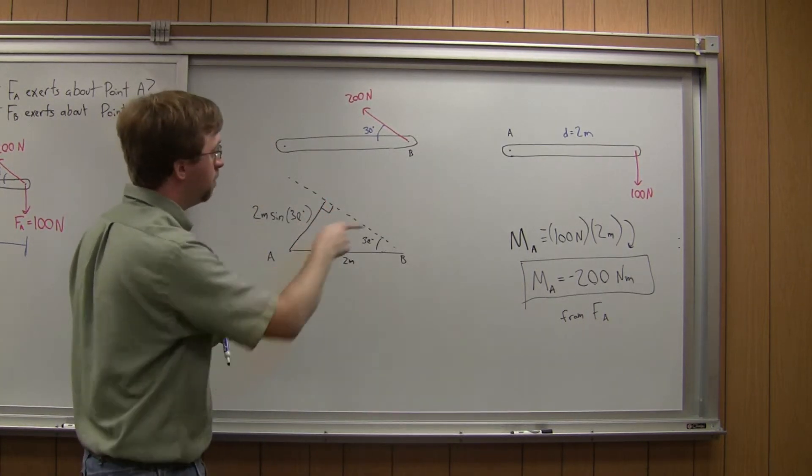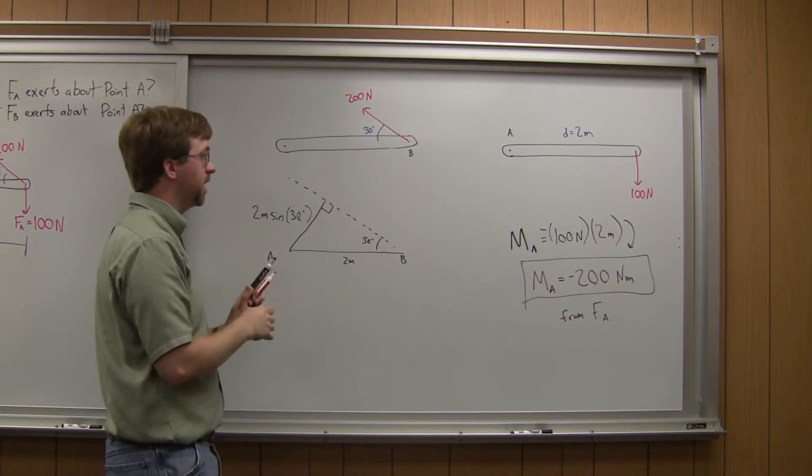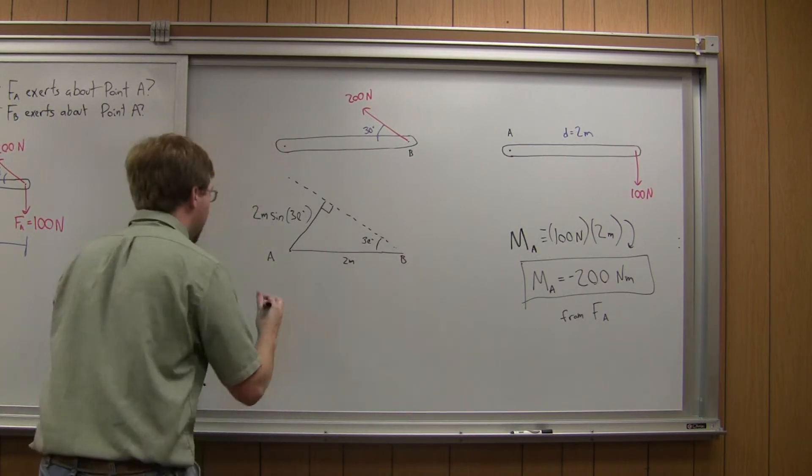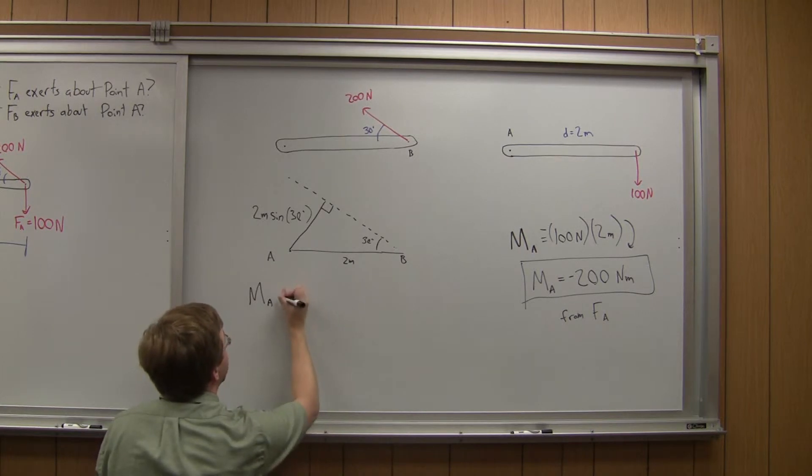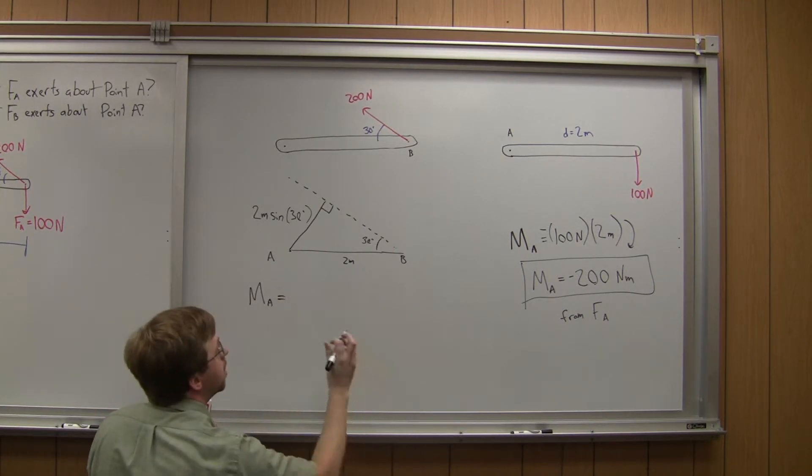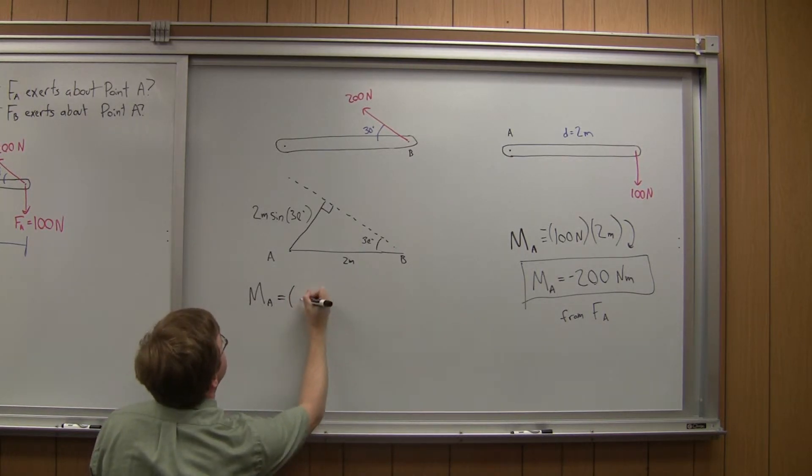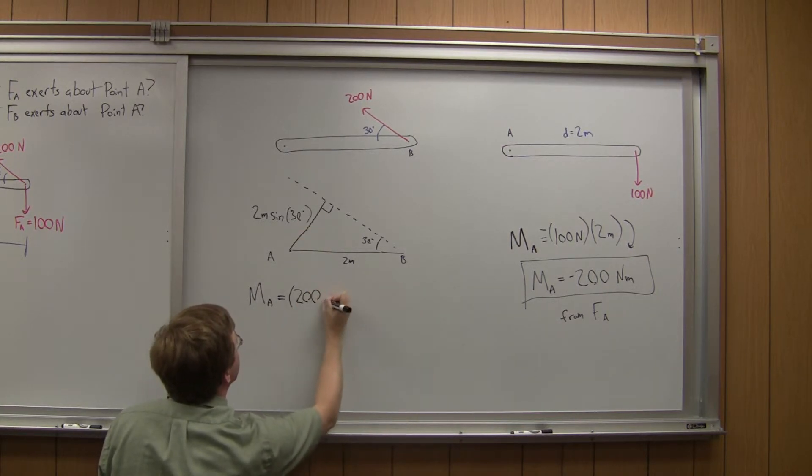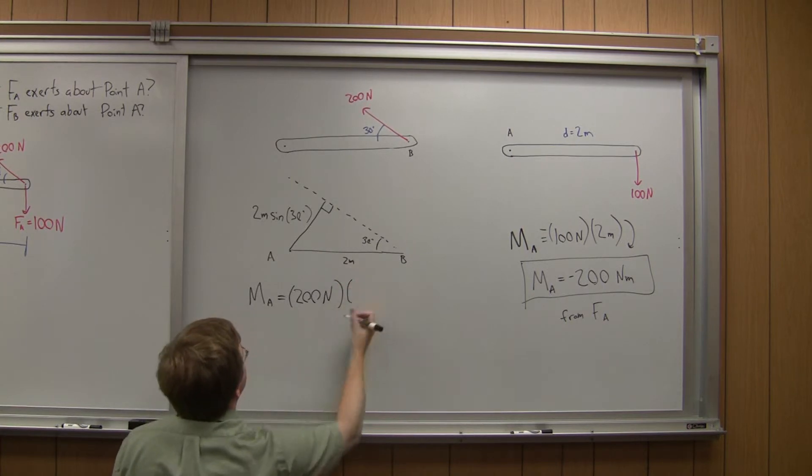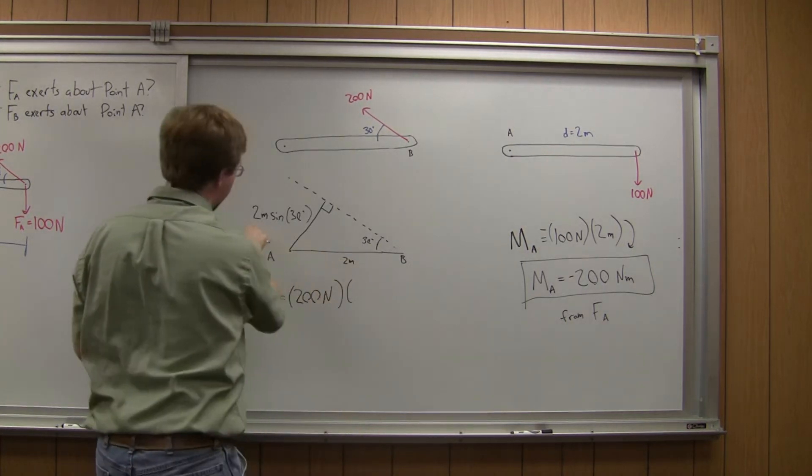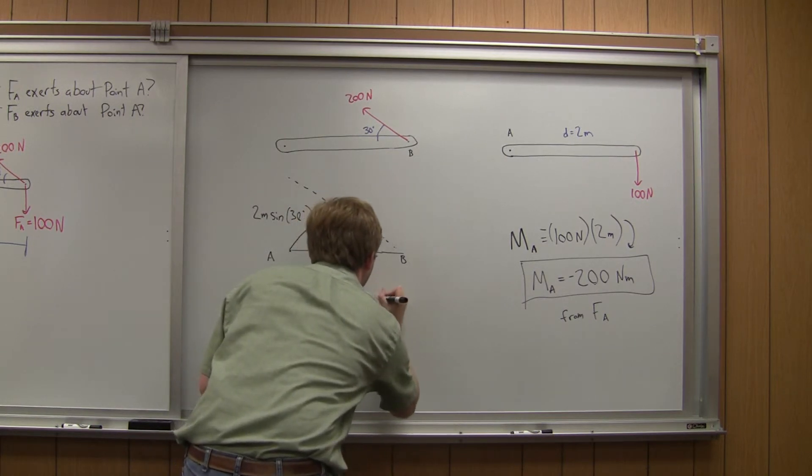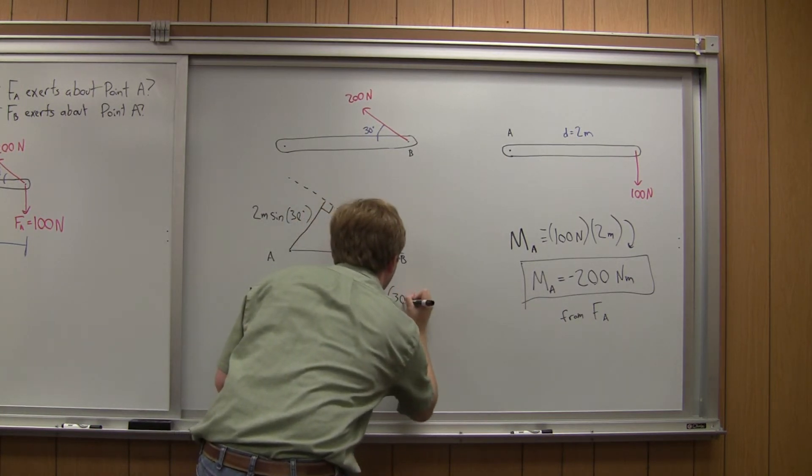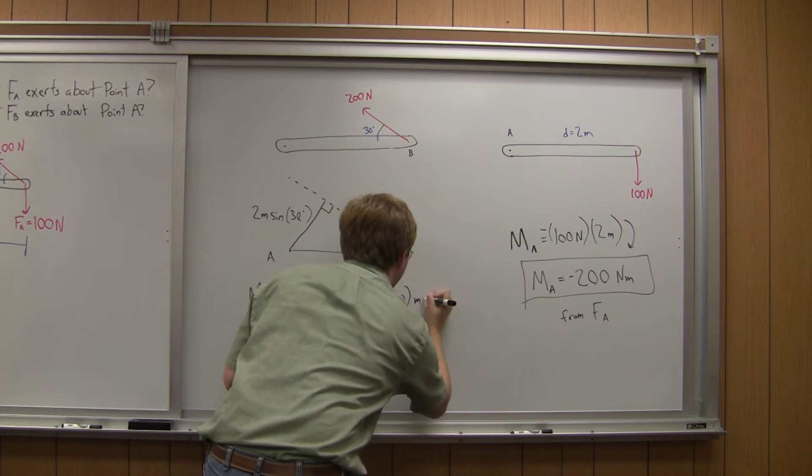Alright? Then we're going to do the same calculation we did over here. So MA, the moment about point A, is going to be equal to the force, so the force is going to be 200 newtons, times the distance, and the distance is this 2 sine 30. And the units are going to be meters there.